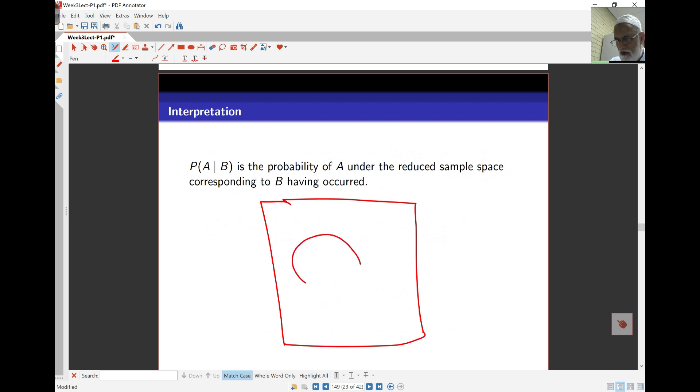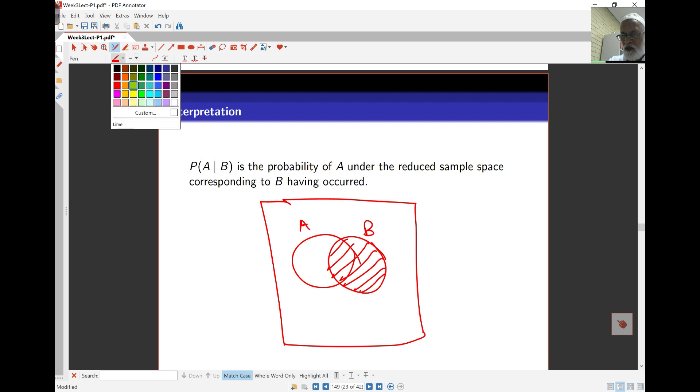Then what I have here is a Venn diagram for A and B. This is A and this is B. But since B has already occurred, my sample space is restricted to this part here. And in that part, the only portion of that where A occurs is here,